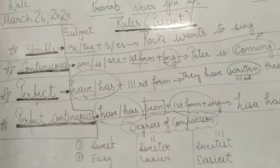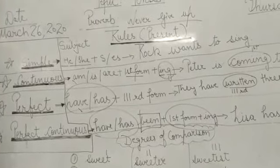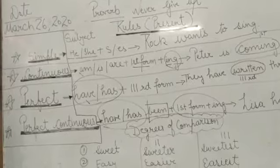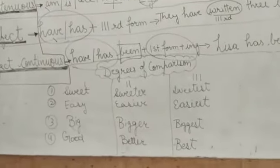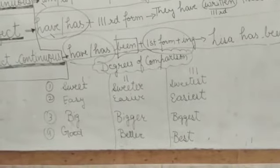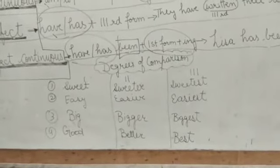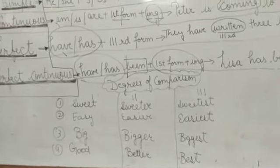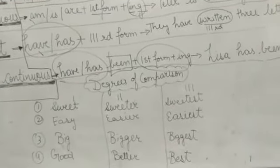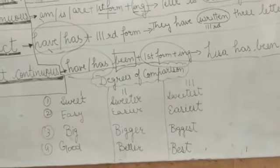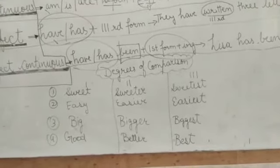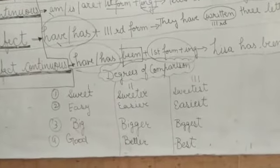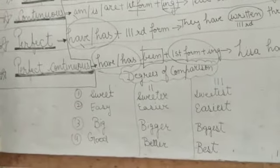And I want you should write in your notebook like this only. One page, one rule. This is the summary of, you know, present tense. And here you can see degrees of comparison. Jin ku nahi pata hai: first form, second form, third form. I have written few examples. Rest you can search from your Google. Sweet, sweeter, sweetest. First form sweet, second form sweeter, third form sweetest. So these four examples are for you. Rest you can search abundant of examples in Google and somewhere else.